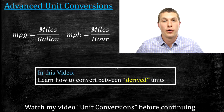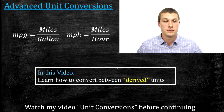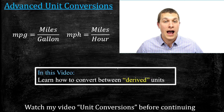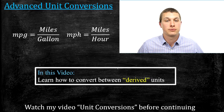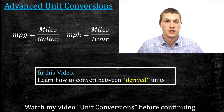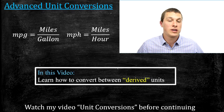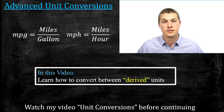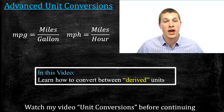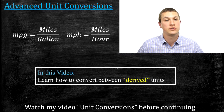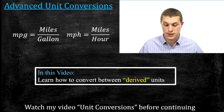In this episode of Real Chemistry, we're going to talk about doing unit conversions with things like miles per hour or miles per gallon. These are both called derived units because we're combining two different units to measure something. If you haven't watched my video on unit conversions, go ahead and do that first because this video assumes you know how to write conversion factors to do this process.